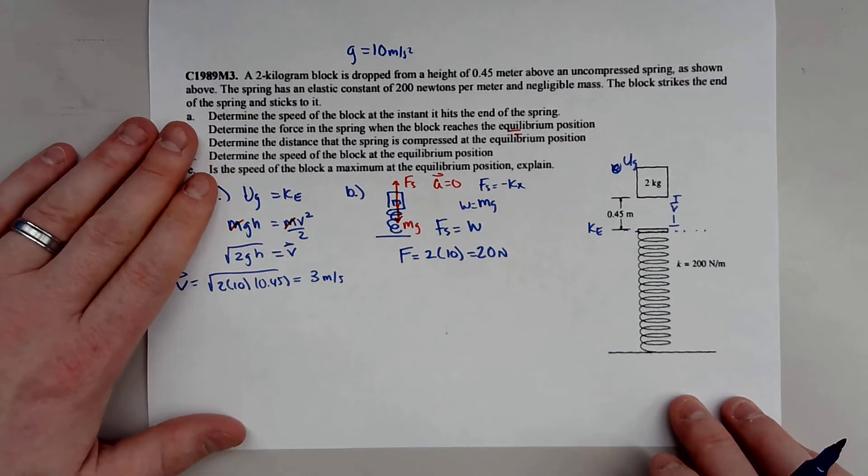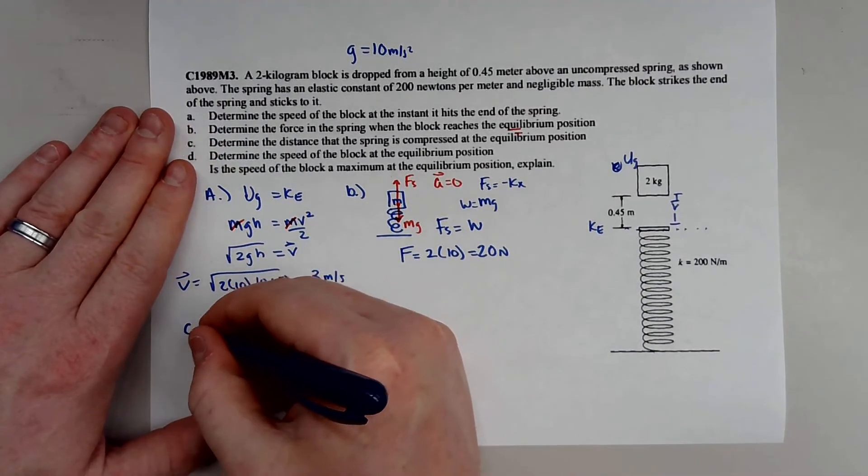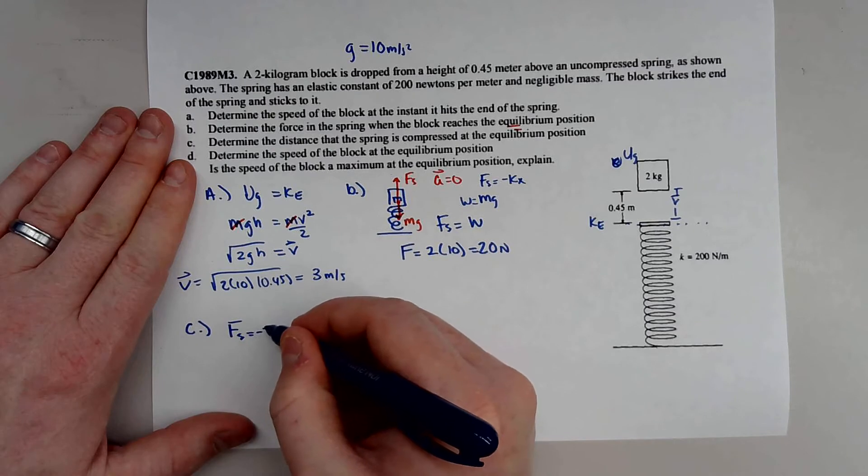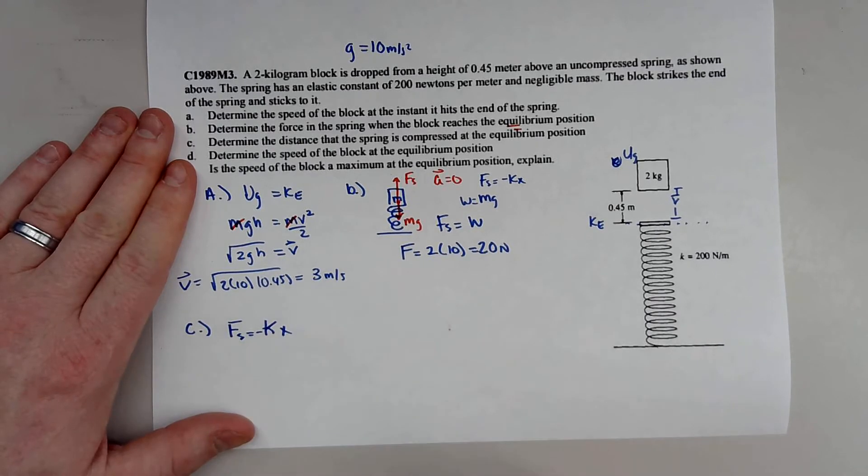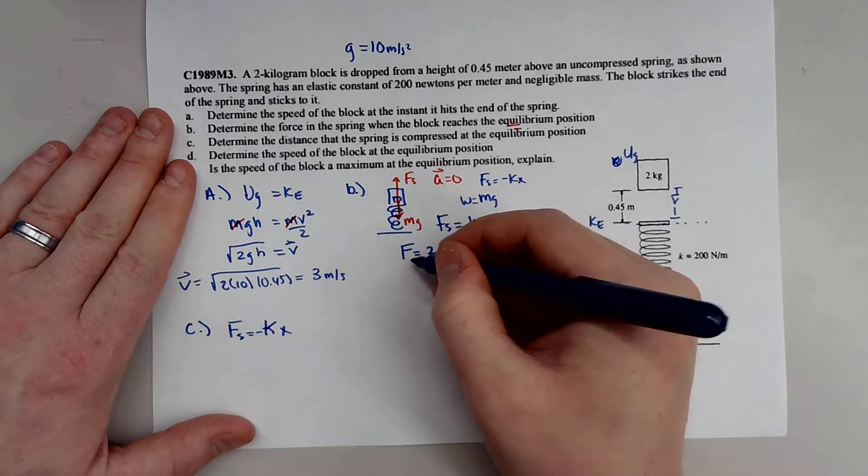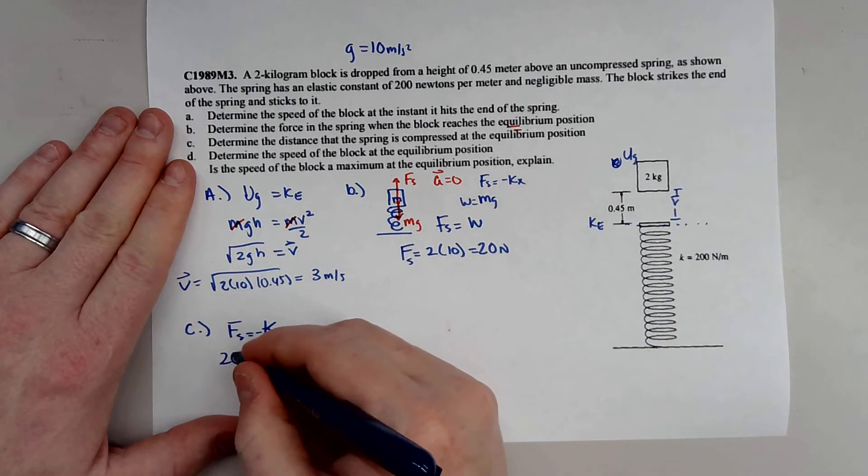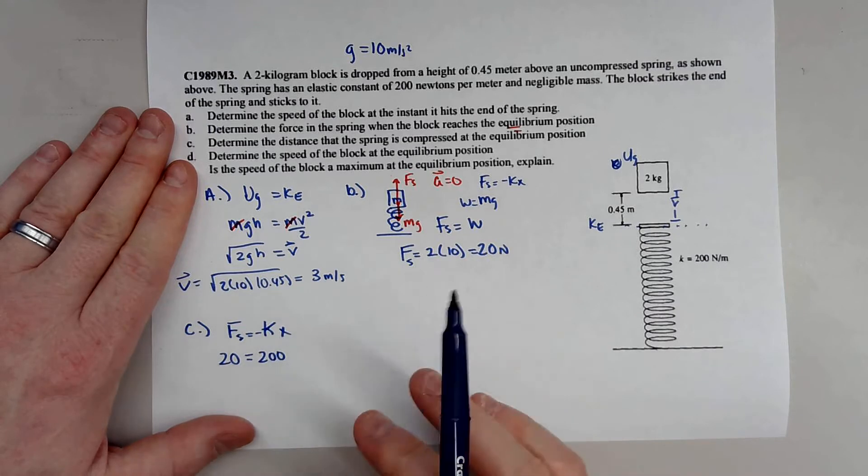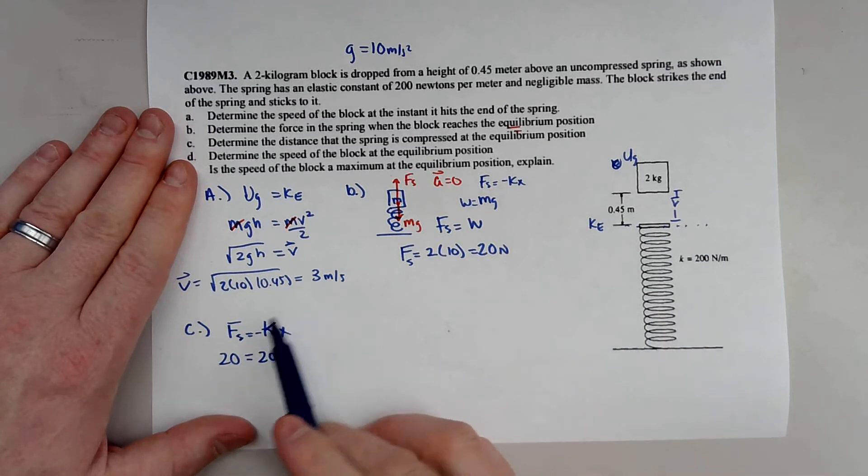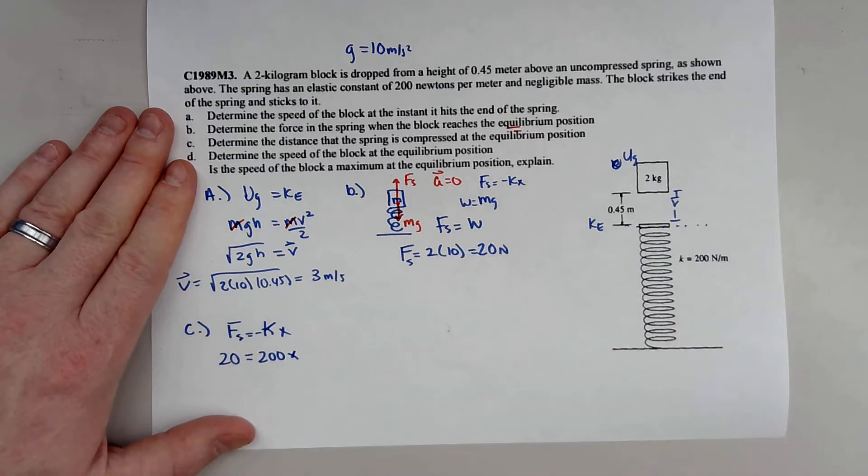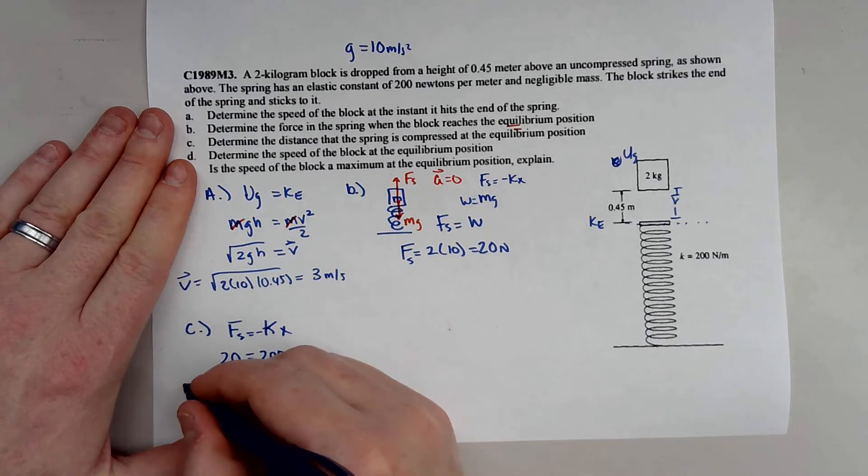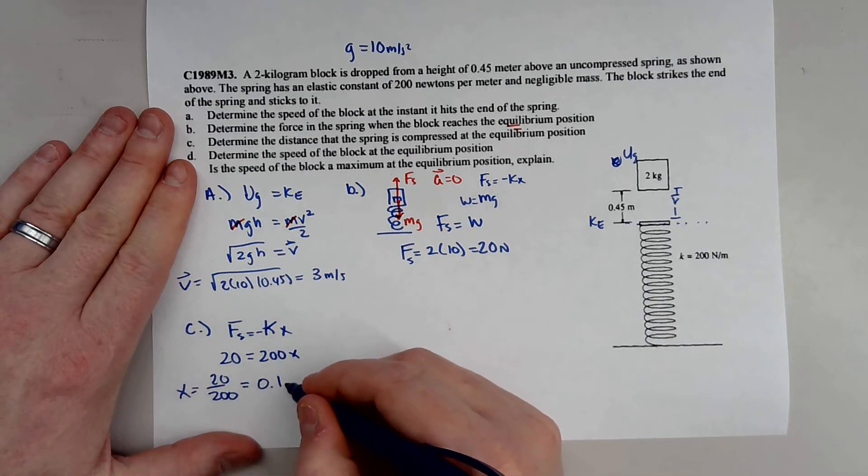Part C is determining the distance the spring is compressed at equilibrium position. So now we're going to kind of take a play on this. So we know that the force on the spring is equal to negative kx. And we know that the force on the spring, we can actually write this, is just 20 newtons. And we know k is 200. And I'm going to disregard the negative. It's just talking about the direction. Remember, a spring always resists being compressed or stretched. That's why you have a negative in Hooke's law. And all you have to do now is solve for that x. So you have 20 over 200, and that gives you our displacement of our spring, and that's roughly 0.1 meters.